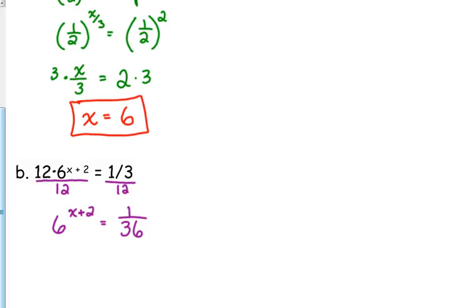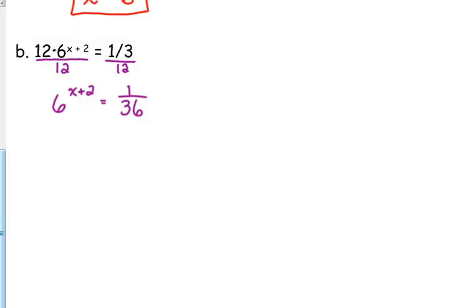So we have a base of 6 on the left side. We would like for there to be a base of 6 on the right side. What's the relationship between 6 and 36? It's squared. How can we get it in the denominator? A negative exponent. 6 to the negative 2 power is 1 over 36. Because 6 squared is 36. The negative moves it to the bottom. So that means x plus 2 must be equal to negative 2, which says x is equal to negative 4.